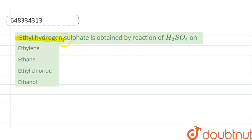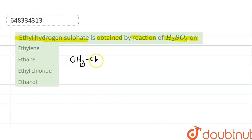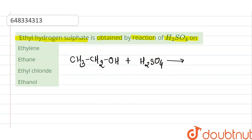Ethyl hydrogen sulfate is obtained by reaction of H₂SO₄ with — ethylene, ethane, ethyl chloride, or ethanol? When ethanol, that is CH₃CH₂OH, reacts with H₂SO₄, then formation of ethyl hydrogen sulfate, CH₃CH₂OSO₄H, occurs.